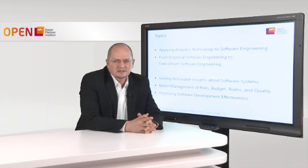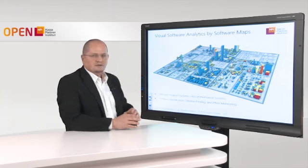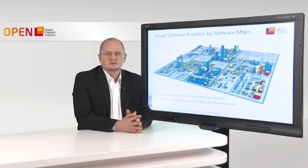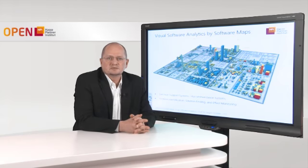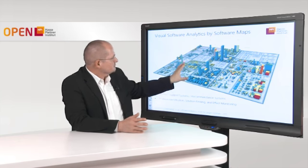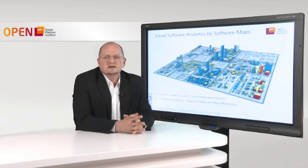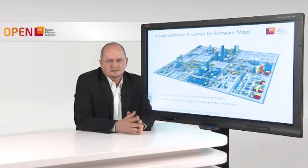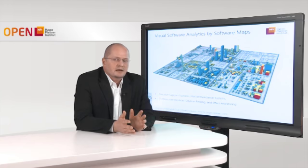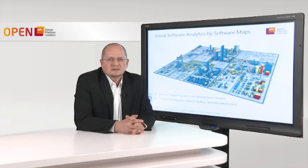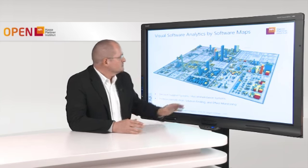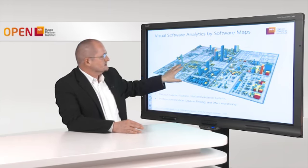To give you just one example, let's have a look at the software map — a tool frequently used in Visual Software Analytics. Here you see a software map that outlines the modules of the Android operating system. For each module, we map certain attributes, certain software quality metric values as well as developer information onto visual variables of this representation.